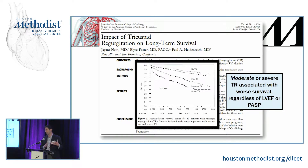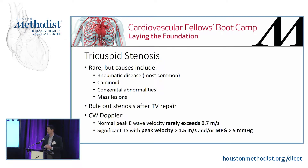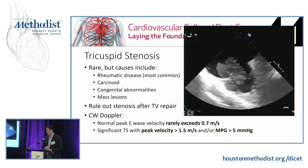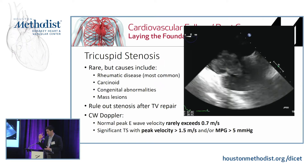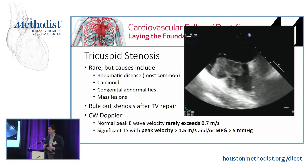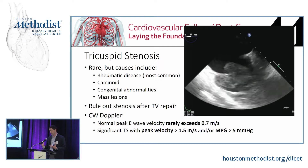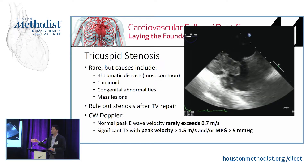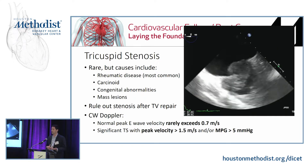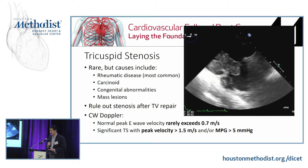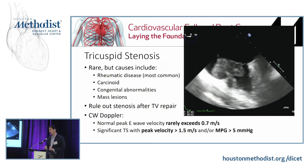Moving to rare disease processes: tricuspid stenosis. The most common cause is rheumatic disease, which usually occurs alongside left-sided valve disease. Carcinoid can also cause it, as can congenital abnormalities or a large mass lesion obstructing flow — such as the malignant carcinoma shown here. Knowing the criteria for tricuspid stenosis is actually most useful when assessing a repaired valve to see if the repair caused stenosis. Because the annulus is normally so large, velocities rarely exceed 0.7 m/s. A peak velocity over 1.5 m/s or a mean gradient over 5 mmHg indicates severe stenosis.